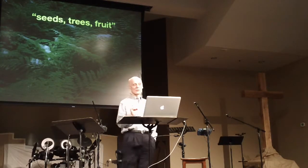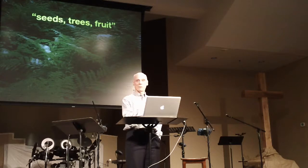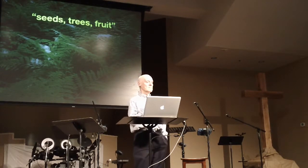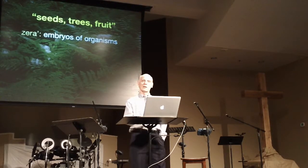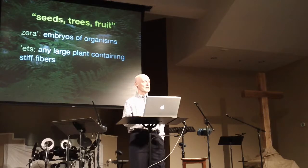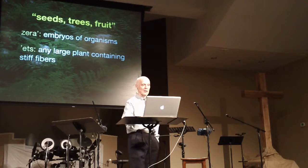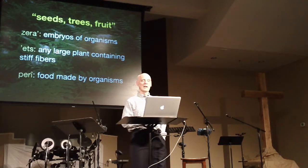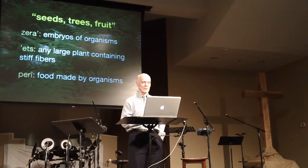Many English language readers think the text is simply referring to God creating advanced flowering trees — well, that's part of it, but it's not all of it. When you look at the Hebrew words for seed, trees, and fruit, they're far more generic than in English. The word for seed means the embryo of organisms, applying to all plant life. The word for tree, etz, refers to any large plant containing stiff fibers — it includes trees, but also algae that form long strands. The word for fruit is peri, meaning food made by organisms. So we're really talking about the more primitive plant forms that first showed up on the continental land masses.